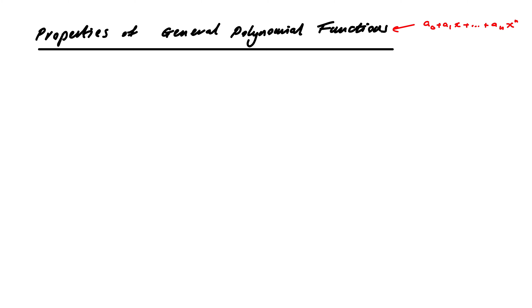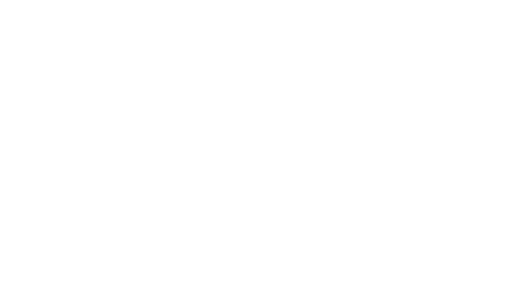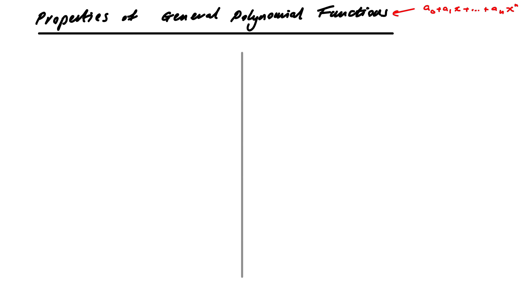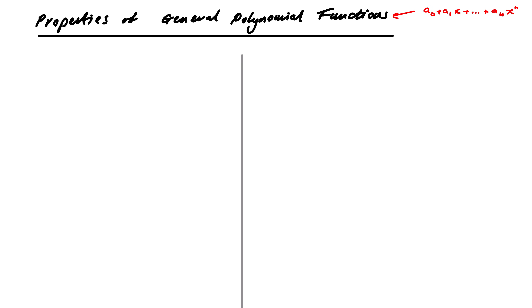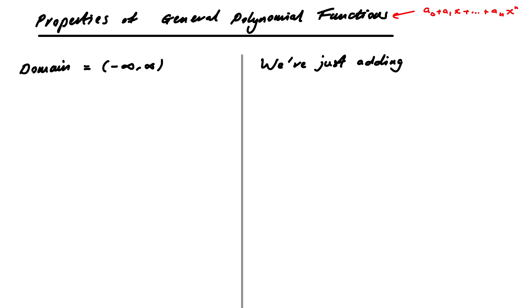Let's go through our core properties. I'll put the general property on the left-hand side and examples or justifications on the right. First of all, domain — this is very straightforward. The domain is everything, because all we are doing is adding and multiplying numbers, and we can do that for any x at all. A polynomial expression makes sense for any x.